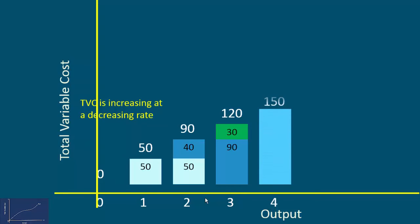The producer produces 4 units. The total variable cost moves up to 150 rupees. The rate of increase is 150 minus 120, 30 rupees. When he expands his output from 3 units to 4 units, the rate remains at 30 rupees. It means TVC is increasing at a constant rate.